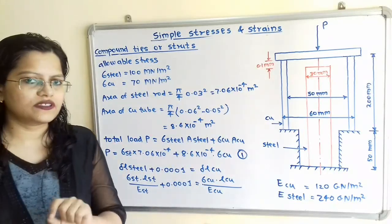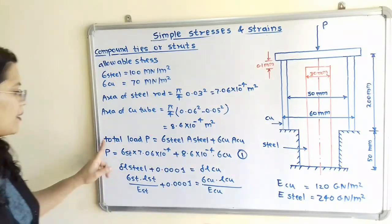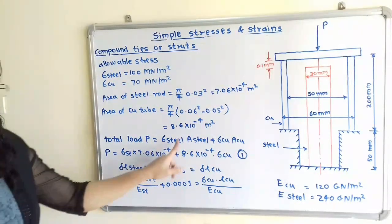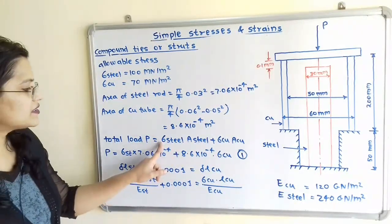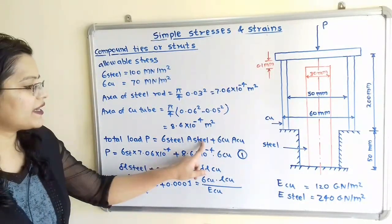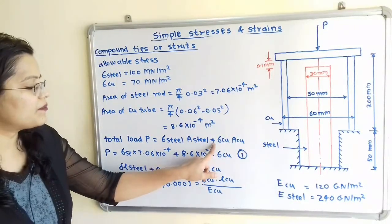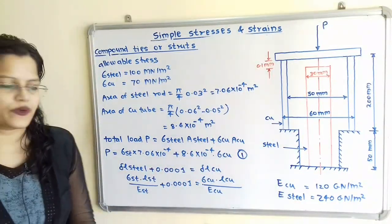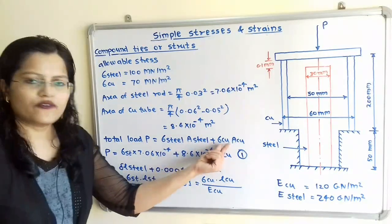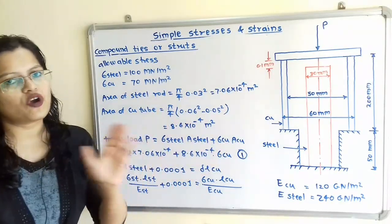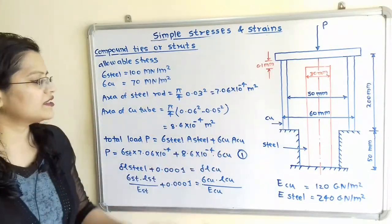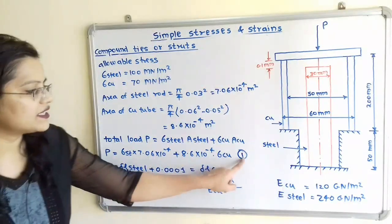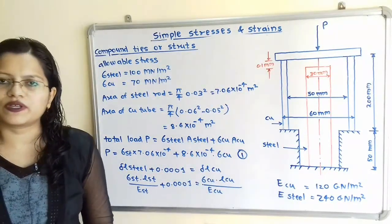Now we will apply condition 1. Total load P = sigma_steel × area_steel + sigma_copper × area_copper. The stress values for steel and copper are unknown but the areas are known. Substituting the area values gives us equation number 1.